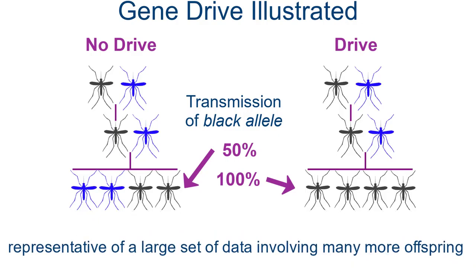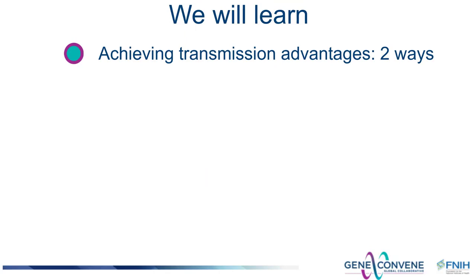Note that for our purposes here, let's assume that what we are looking at are representative outcomes of the illustrated genetic crosses after being repeated many times. The outcome of one genetic cross with only four offspring alone would not provide sufficient data to make a conclusion regarding drive one way or the other. In this video, we'll learn about two strategies by which transmission advantages can be achieved and that are being used for creating transgenes that display gene drive.